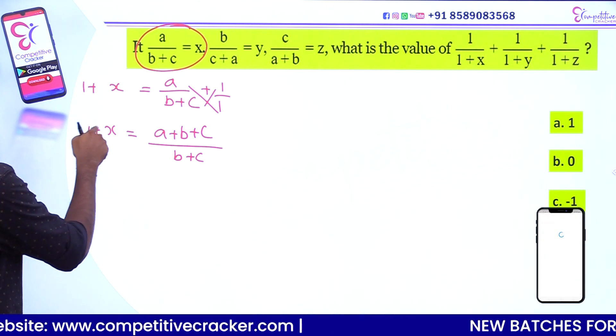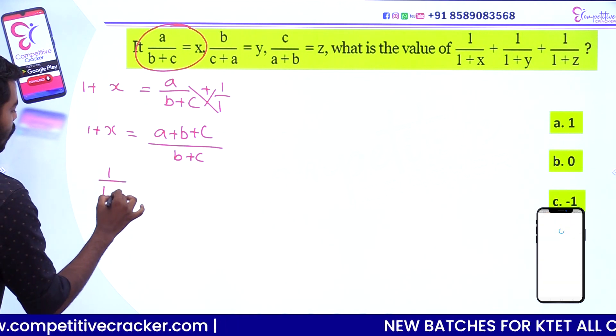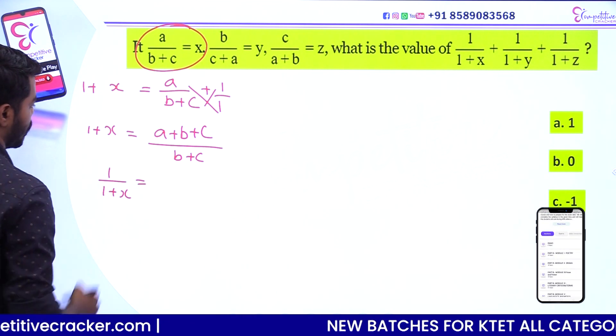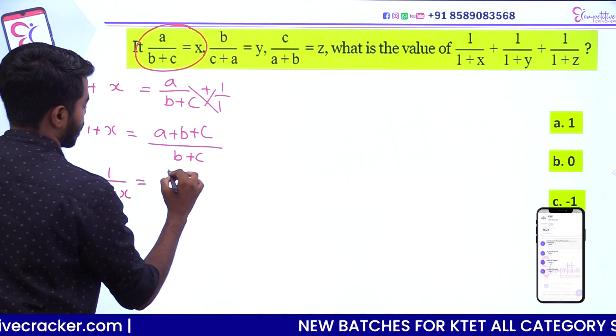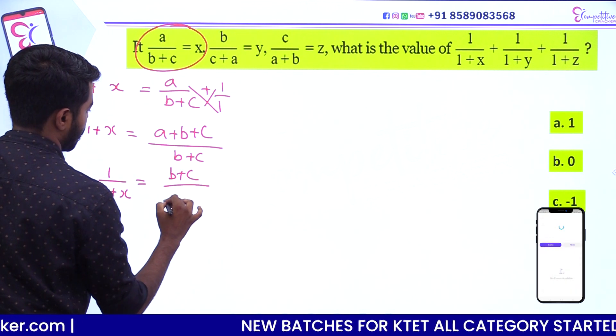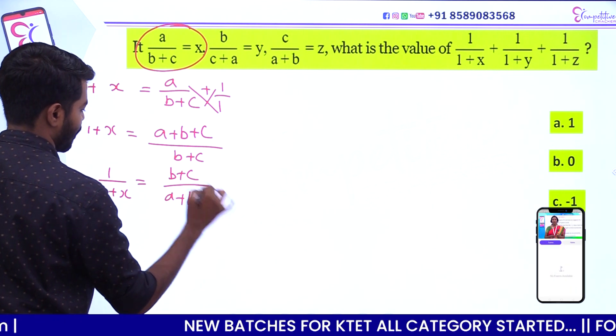That is, 1 by 1 plus x is equal to b plus c divided by a plus b plus c.